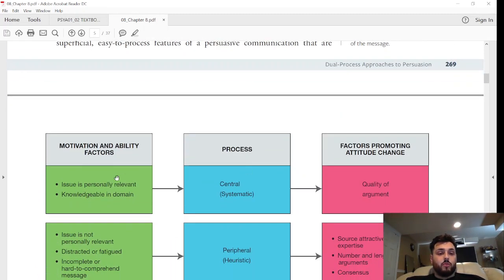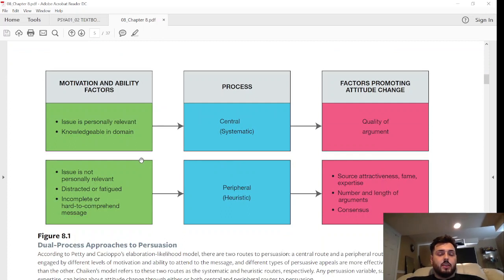We can look at this diagram here. Motivation and ability factors: the issue is personally relevant and the person is knowledgeable in the domain, so they're going to use a central systematic way to break this down. The way that the person's attitude would be changed would be through quality of the argument. For example, if I'm very knowledgeable in a certain sport and I'm rooting for a certain team, and someone is trying to persuade me to cheer for the opposite team, this issue is personally relevant to me. I'm knowledgeable in this domain, and so is the person I'm talking to. So we're going to break this down logically in a systematic fashion, and I'm going to hope that the person talking to me has a better quality of argument than I do for why I should cheer for their team.